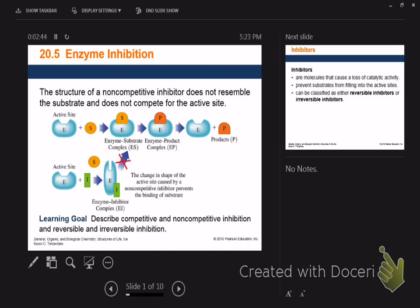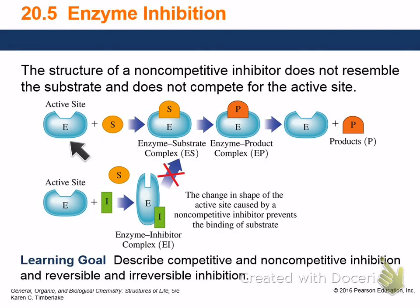Couldn't they tell the balls weren't inflated? Anyway — there's an active site, a substrate would normally go in and produce a product. You put a non-competitive inhibitor — it doesn't look like the substrate — it binds over here at a different site and slows down the reaction.